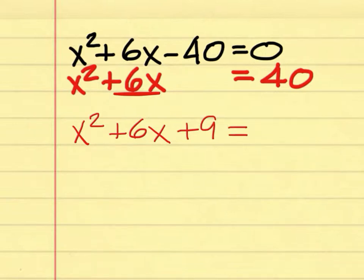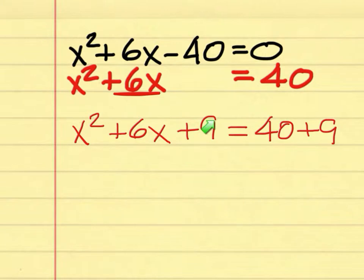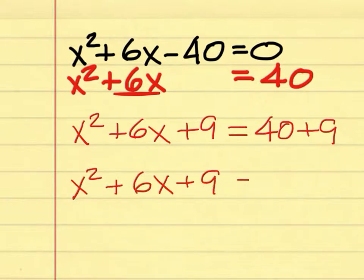What you add to the left side, you add to the right side. Half of 6 is 3, 3 squared is 9. You add the 9 to this side and add the 9 to that side. Simplify the right side: 40 plus 9 is 49. At this point, you should have a perfect square quadratic expression on the left-hand side because you have just created it.